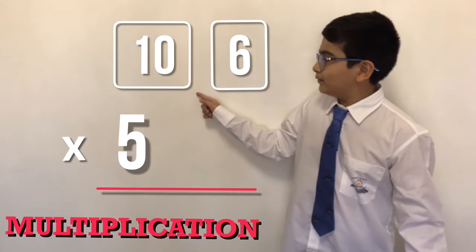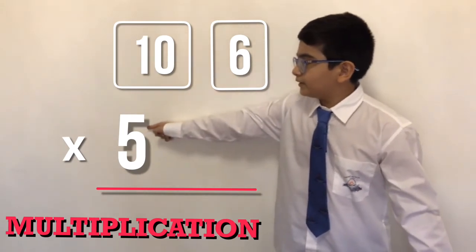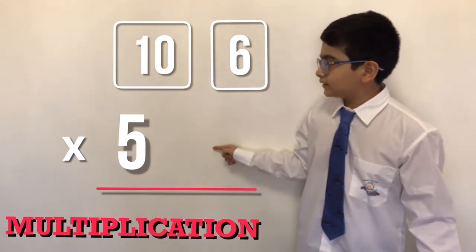First we will multiply 10 by 5, then we will multiply 6 by 5.